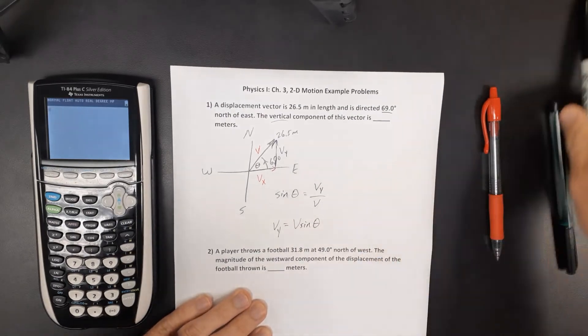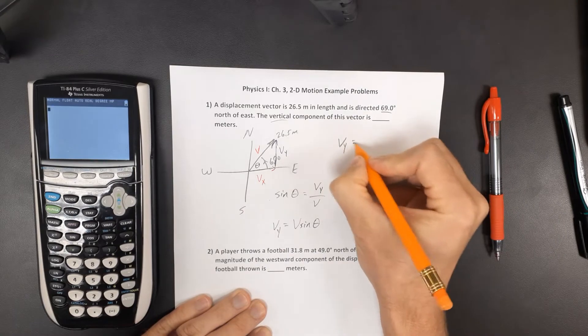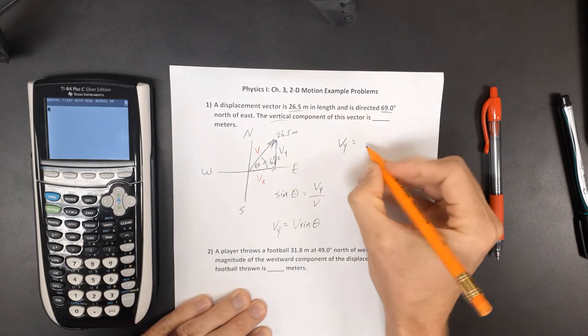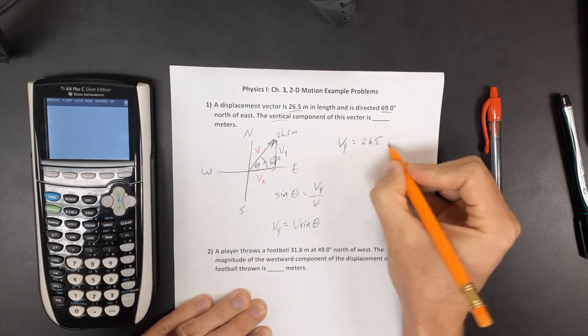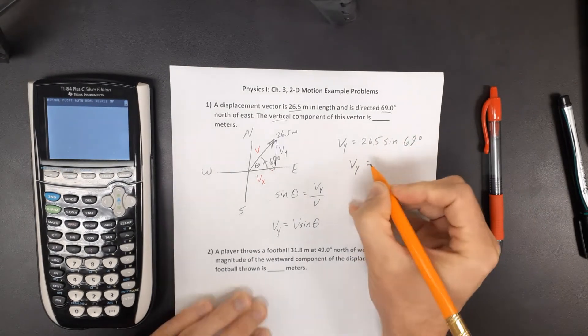So for this particular problem, the vertical or the y component is going to be our vector, 26 and a half times the sine of 69 degrees.